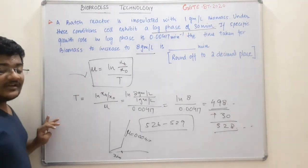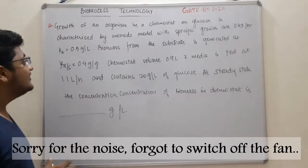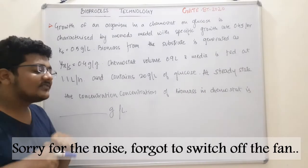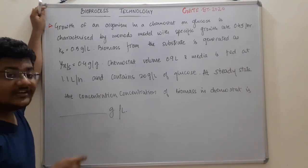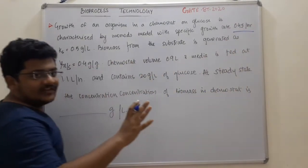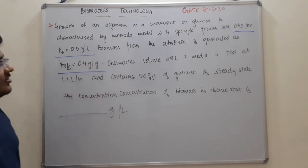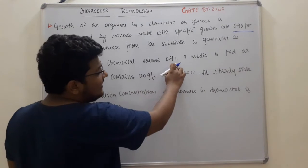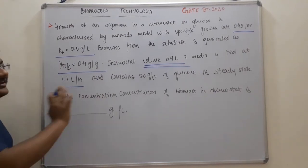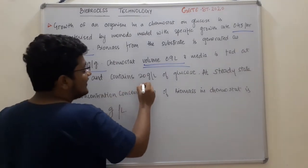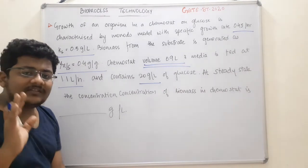Note this formula in your notebook. Now for the second question from the GATE Biotechnology 2020 exam, which is a bit tricky but actually simple. It says: growth of an organism in a chemostat on glucose is characterized by Monod's model with specific growth rate of 0.45 per hour. A yield is given. The chemostat volume is 0.9 liter, media is fed at 1.1 liter per hour, and the feed contains 20 gram per liter of glucose. At steady state, what will be the concentration of biomass in the chemostat?